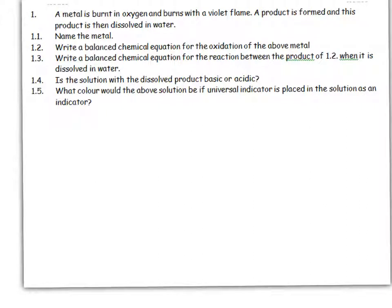If a metal is burnt in oxygen with a violet flame, that metal must be potassium. The product formed is then dissolved in water. So firstly, if we have to name the metal in an exam, you can't write K. You need to say potassium. That's the name of that particular metal.